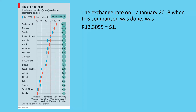Looking at the data, the United States had a Big Mac price of $5.28. Switzerland was really expensive — you had to pay $6.76 when converted from Swiss francs to dollars. Whereas right at the bottom, Russia was the cheapest and, surprisingly, South Africa was the second cheapest.